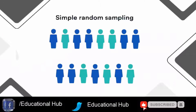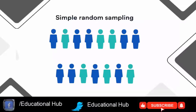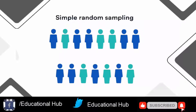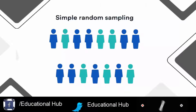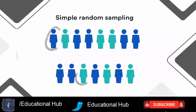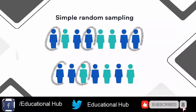1. Simple random sampling. In a simple random sample, every member of the population has an equal chance of being selected. Your sampling frame should include the whole population. To conduct this type of sampling, you can use tools like random number generators or other techniques that are based entirely on chance.